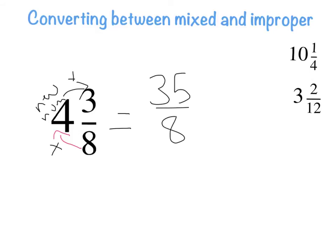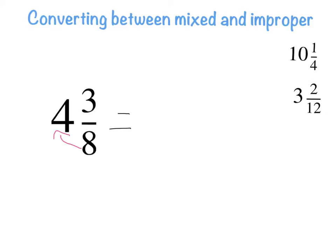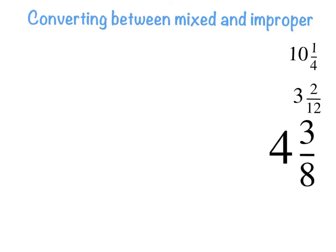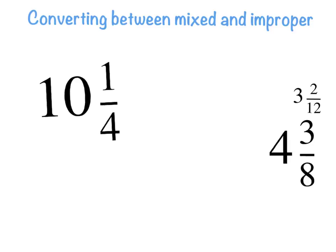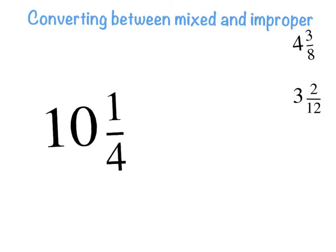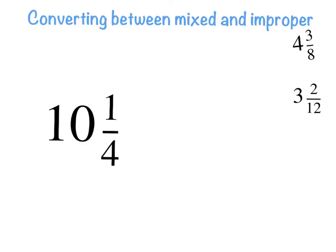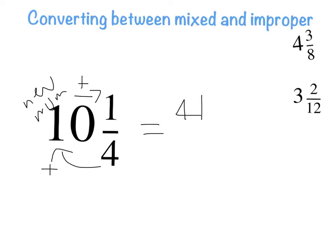Let's look at another example. Same process: four times ten is forty, then add one, giving forty-one over four. So forty-one over four is how you represent ten and a quarter as an improper fraction.